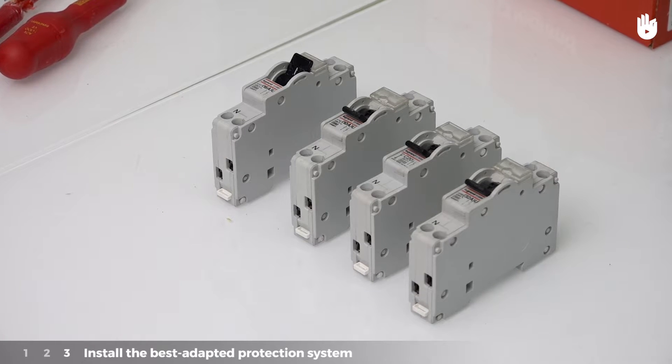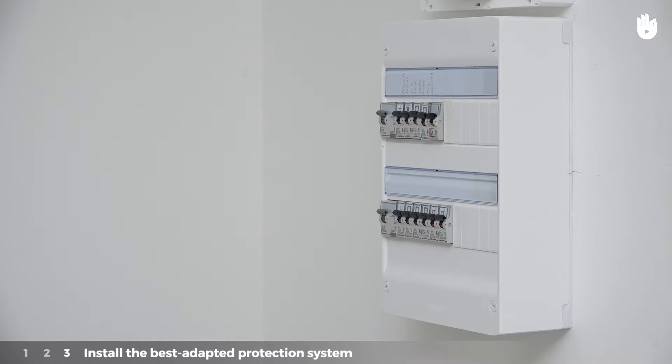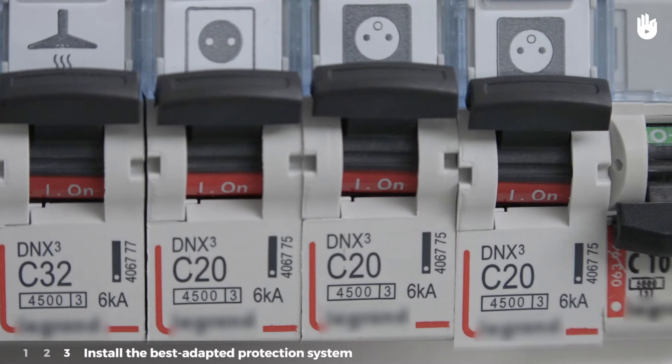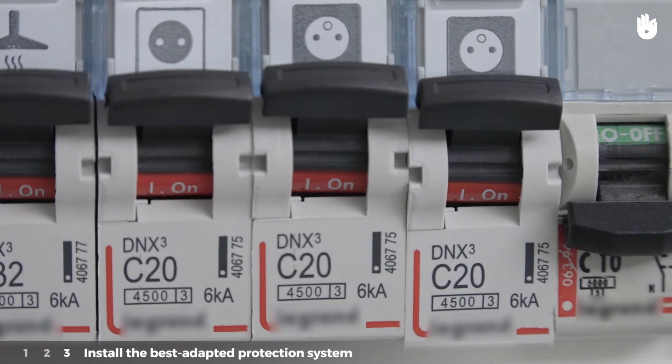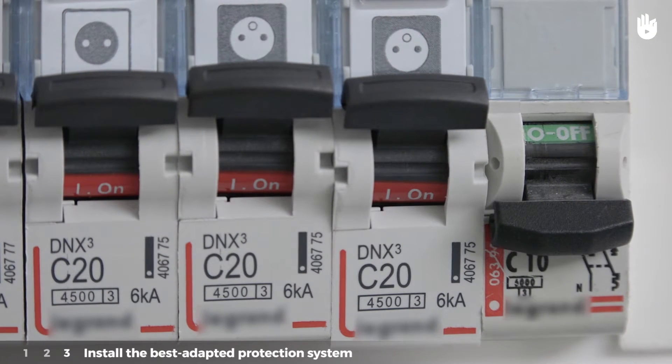Step 3: Install the best adapted protection system. On the electrical panel, the circuit breakers make it possible to cut off the electrical current if an incident occurs. The choice of circuit breaker will vary in function of the circuits to be protected. This information can be found on the packaging or directly on the circuit breaker itself.